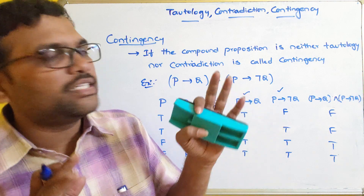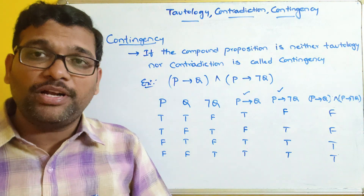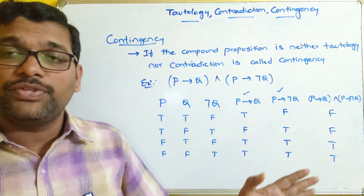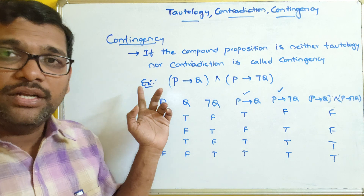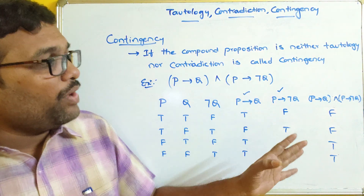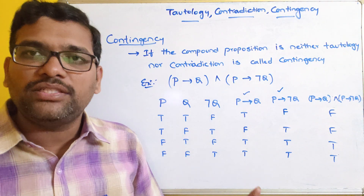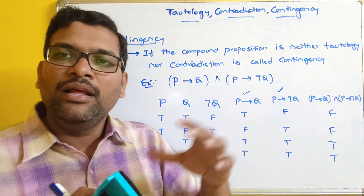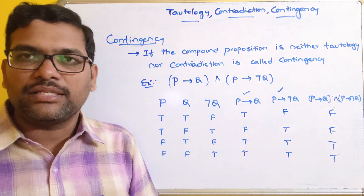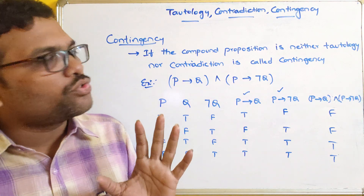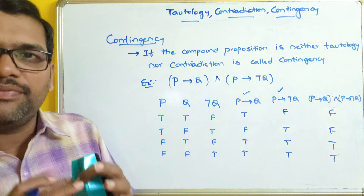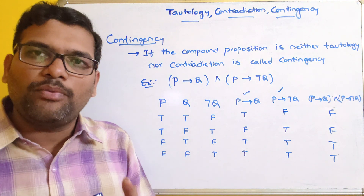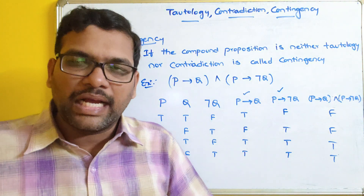To summarize: tautology means the truth value for all possibilities is true. Contradiction means the truth value for all possibilities is false. If the truth values for all combinations are neither all true nor all false — that is, a combination of both — then we call it a contingency. Practice taking some statement formulas and finding out whether they are a tautology, contradiction, or contingency.